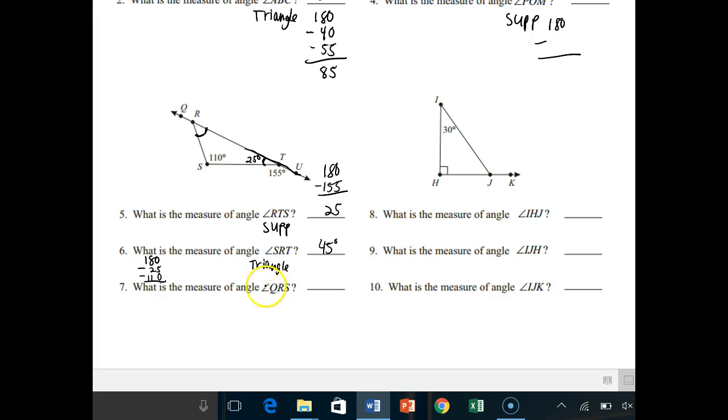Finally, what's the angle of QRS? Well, QRS is on the outside. We should put our 45 degrees that we found from the last one. And we also recognize that this is on a straight line again. So it's the supplemental relationship. So we'll do 180 minus 45. 180 minus 45 gives us our answer of 135 degrees.